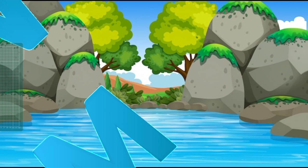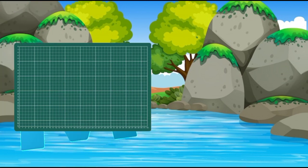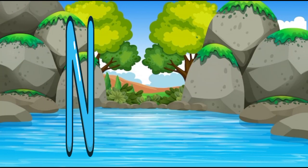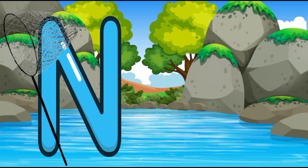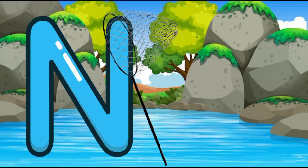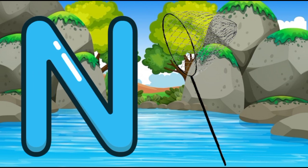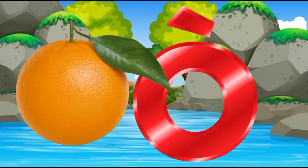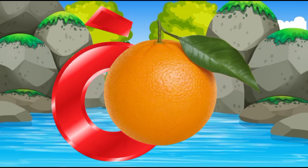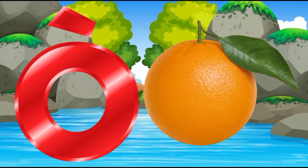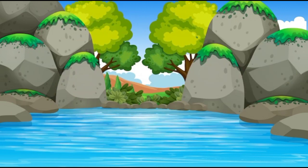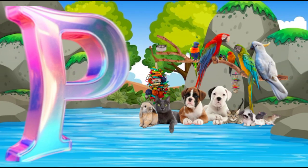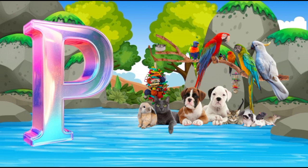M is for mat, m-m-mat. N is for net, n-n-net. O is for orange, o-o-orange. P is for pet, p-p-pet.